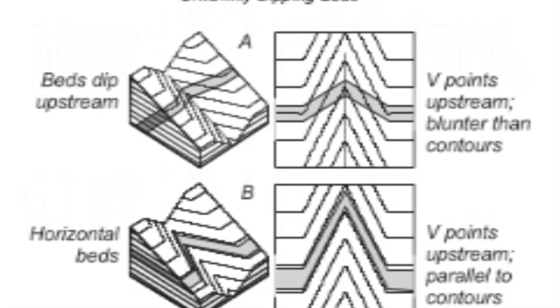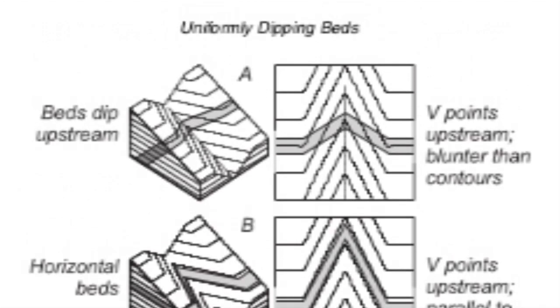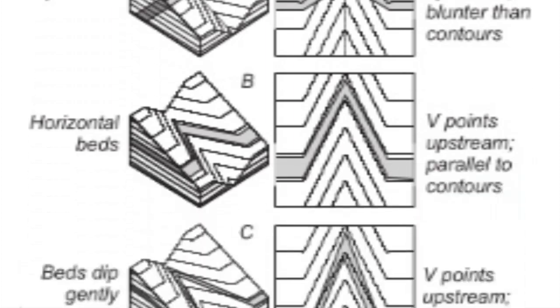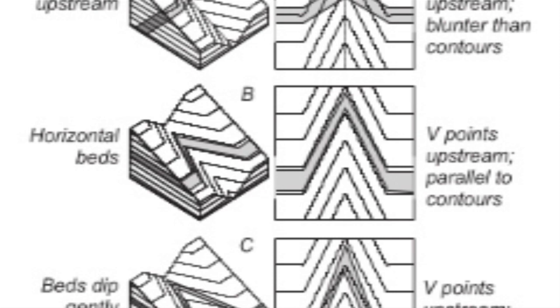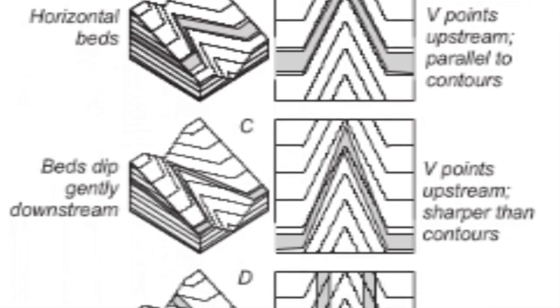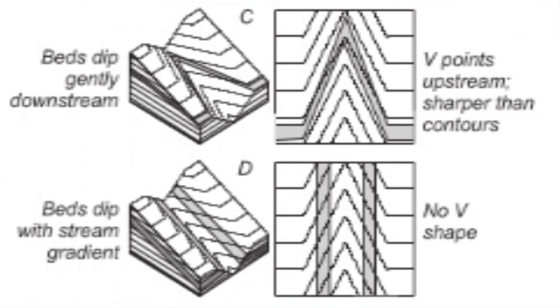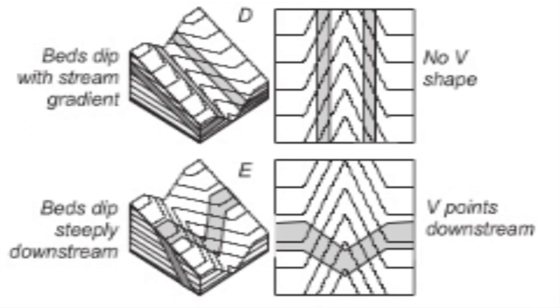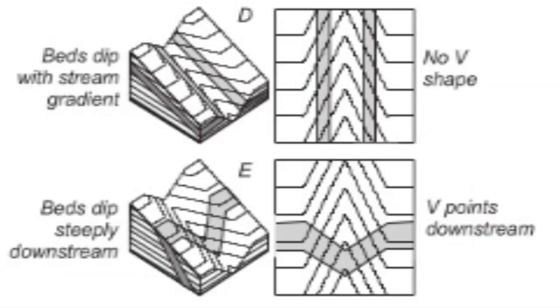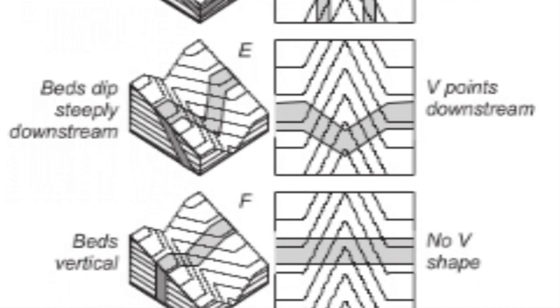As layers tilt dipping upstream into the valley, the V still points upstream and starts crossing the contour lines, reaching less and less up the valley. The bed exposures eventually become a straight line across the valley if tilted 90 degrees on edge. If beds dip downstream, the V pattern initially creeps up and then gets more severe until it breaks into two parallel lines on either side of the valley if the bed dips at the same slope as the valley grade. With the rock beds dipping steeper than the grade of the stream downstream, the bed exposure eventually joins to make a V downstream. As we increase the downstream dip, the downstream V gets less and less severe until it is a straight line across when the bed is vertical.